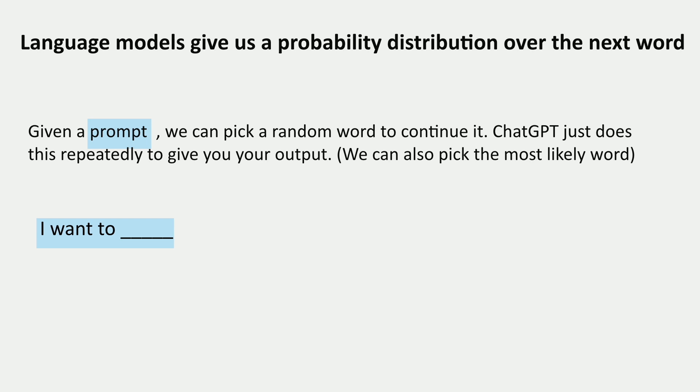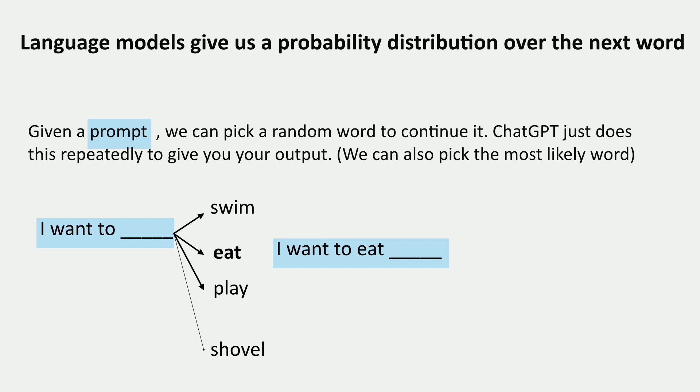If we have 'I want to blank,' we ask the model what can come next and it gives us a distribution. We randomly pick 'eat.' Now we make a new input: 'I want to eat blank,' and feed that in. It generates a bunch of options — maybe we get 'Korean,' and then it generates 'barbecue.' We can keep going from here.